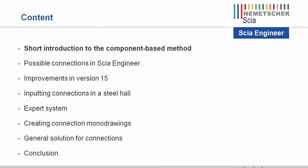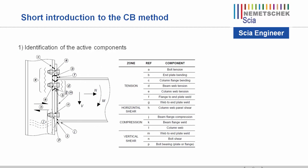Let's start with a short introduction to the component-based method. The general analytical procedure used for determining the resistance and stiffness properties of a joint is the so-called component-based method. This method considers any joint as a set of individual basic components, and each of these basic components possesses its own strength and stiffness.